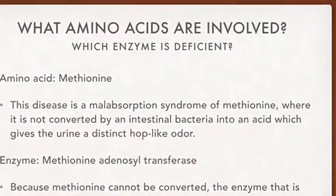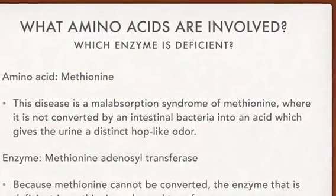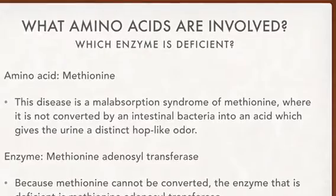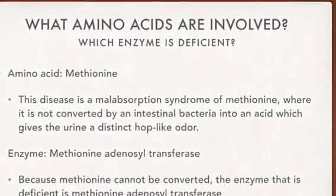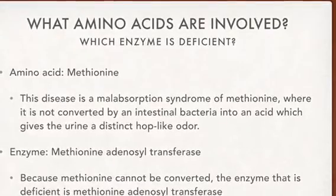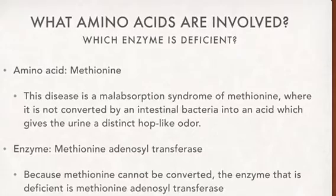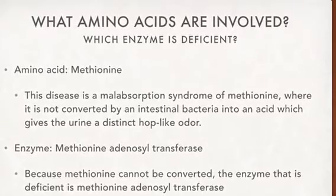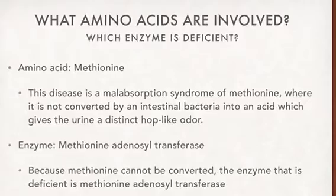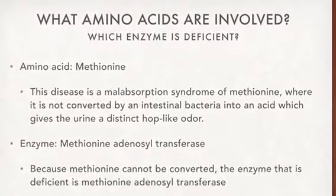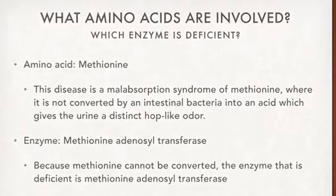What amino acids are involved in Oasthouse Urine Disease? The amino acid that's involved is methionine. This disease is a malabsorption syndrome of methionine, where it is not converted by an intestinal bacteria into an acid, which gives the urine a distinct hop-like odor. The enzyme that is deficient in Oasthouse Urine Disease is methionine adenosyl transferase, because methionine cannot be converted.